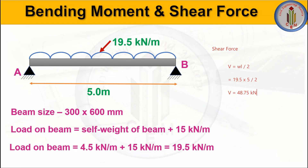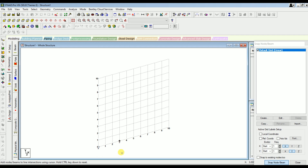Now let's model the same beam in STAAD Pro software and check the results. We got a bending moment value of 60.93 kilonewton meter and a shear force of 48.75 kilonewton. Let's open the software and draw the beam up to 5 meters.